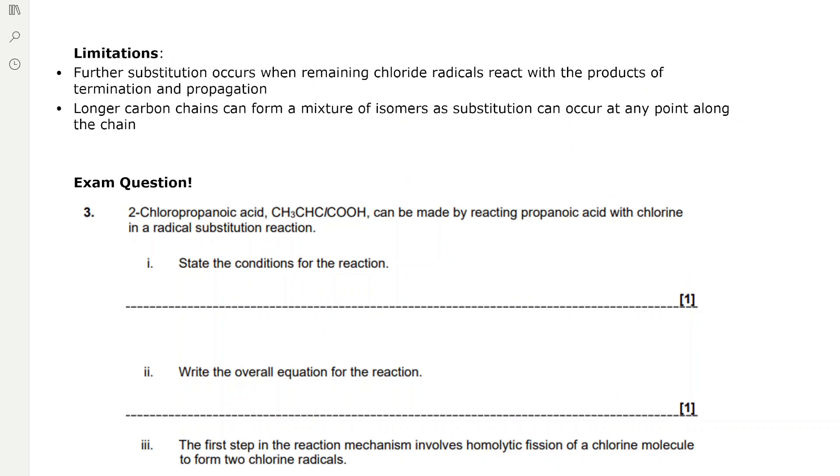These free radical substitution reactions have many limitations. Further substitution occurs when remaining chloride radicals react with the products of termination and propagation, forming a large mixture of products which isn't ideal for the atom economy of the reaction.